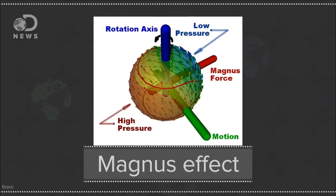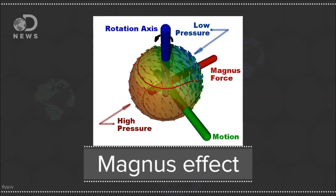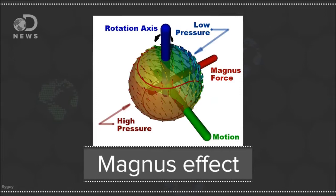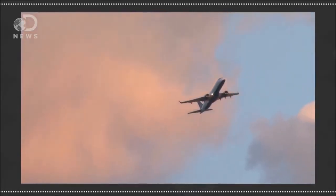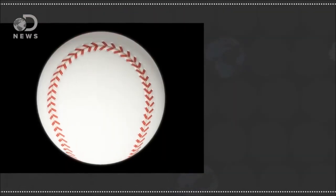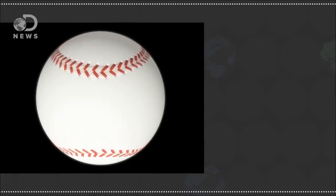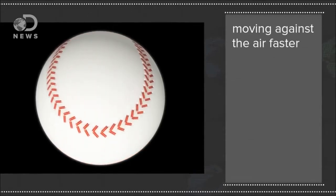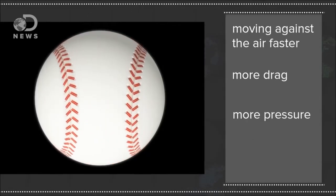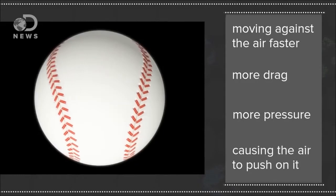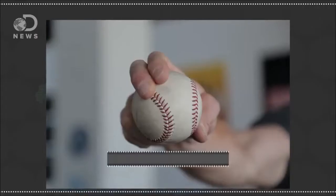The pitcher is taking advantage of the Magnus effect, which is when a spinning sphere affects the air pressure around it, much like an airplane wing. The side of the ball spinning with the direction of travel is essentially moving against the air faster, creating more drag, creating more pressure, and causing the air to push on it. On the opposite side of the ball, air pressure is reduced, and the ball travels more easily in that direction.